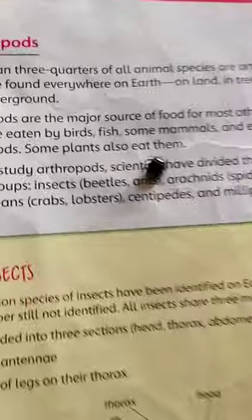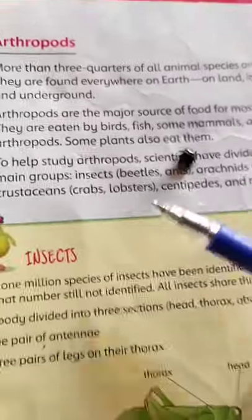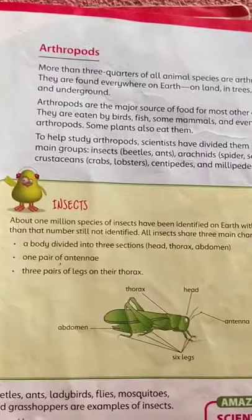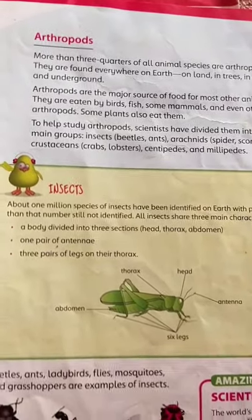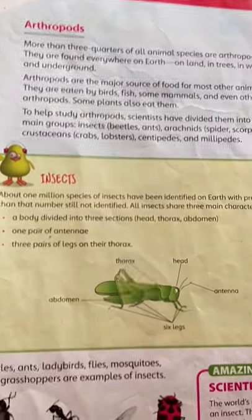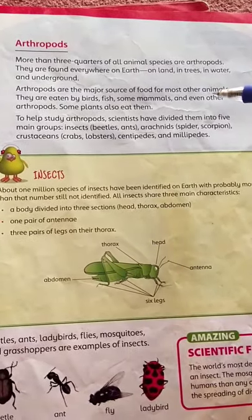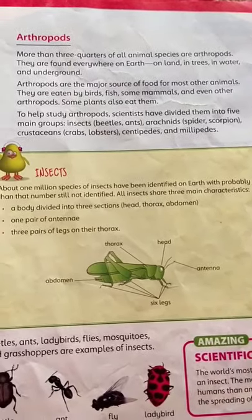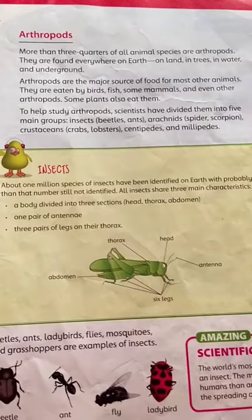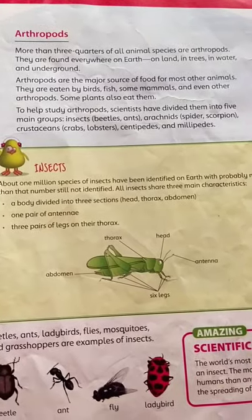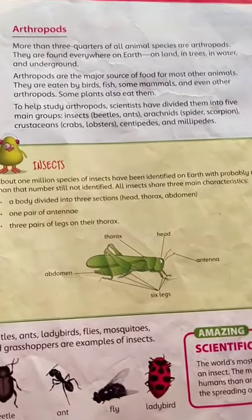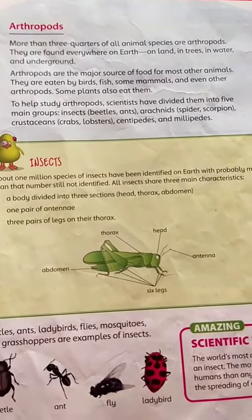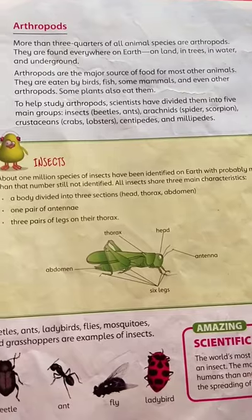Arthropods are the major source of food for most other animals. Insects are eaten by many other creatures — birds like sparrows, crows, and eagles eat insects. They are also eaten by fish, some mammals, and even other arthropods. Insects also eat other insects.